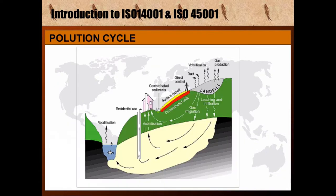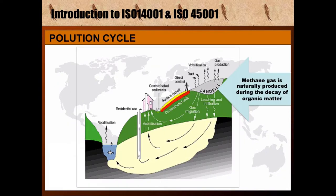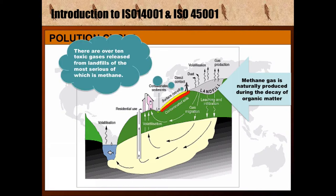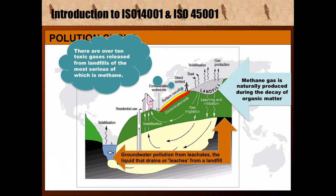The pollution cycle of landfills: methane gas is naturally produced during the decay of organic matter in the landfill. There are over 10 toxic gases released from landfills, the most serious of which is methane. Groundwater pollution comes from leachate — the liquid that drains from a landfill.